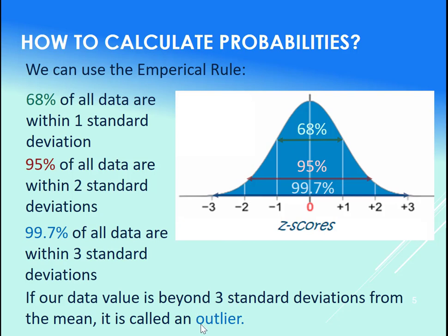If our data value is beyond three standard deviations, we call it an outlier. So if we had data below minus three here in this region, we would call it an outlier, or if we had data above here, we call that an outlier. An outlier is obviously not very common; there's almost no area under the curve on either side there.